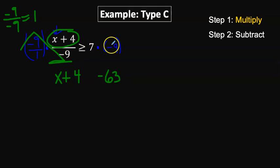Multiplying both sides by negative 9 flips the inequality direction. Remember, multiplying or dividing both sides of the inequality by a negative number reverses the direction of the inequality.